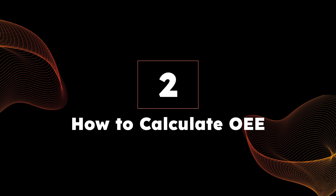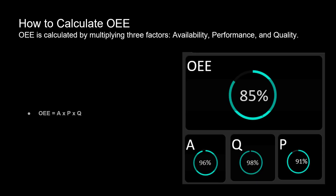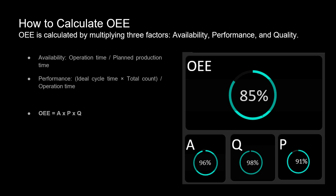Now let's move on to how to calculate OEE. OEE is determined by multiplying three key factors: availability, performance, and quality. Availability is all about how much your machines are up and running when they're supposed to be — it's the ratio of operation time to planned production time. Performance takes into account the speed at which your products are made, comparing ideal cycle time to the total count produced during operation time.